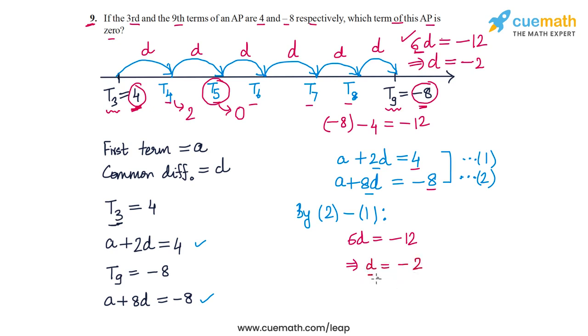Now if you substitute this value of D into the first equation, what do we get? We get A plus 2D, so A minus 4 equals 4. This means that A equals 8. So we have found the value of D and the value of A.